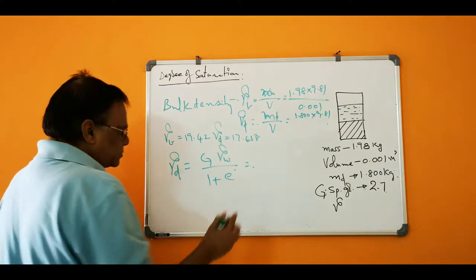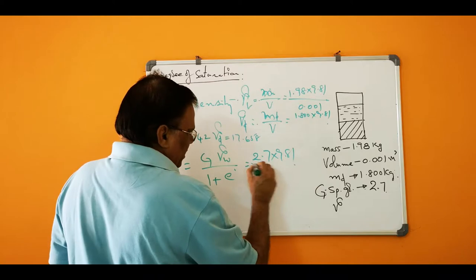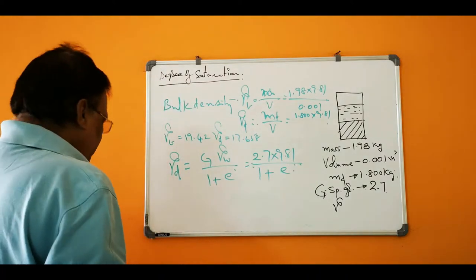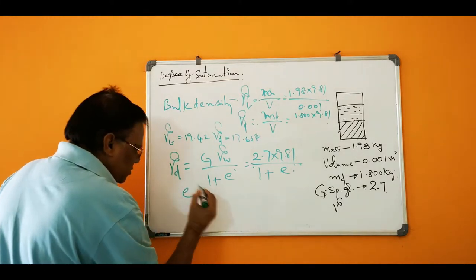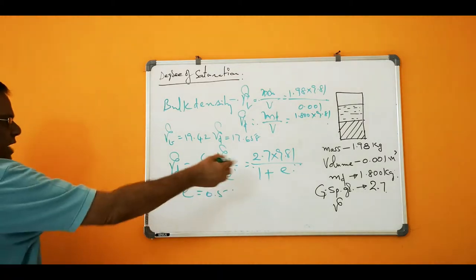So 2.7 into 9.81 divided by 1 plus E. So if you make it, E is equal to, you are getting 0.5.